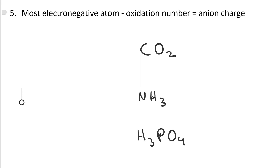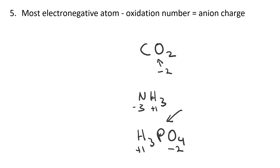After assigning hydrogens, go on to the most electronegative atom. Its oxidation number will be the charge of that element as a monatomic anion. In CO₂, oxygen is more electronegative than carbon — it has an oxidation number of minus two. In NH₃, deal with hydrogen first: nitrogen is a nonmetal so it's more electronegative than hydrogen, making hydrogens plus one. Nitrogen, being more electronegative and in group fifteen, gets minus three. For H₃PO₄, hydrogen is plus one, and oxygen is minus two. Rule six will tell us the oxidation number on phosphorus.